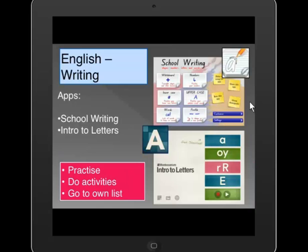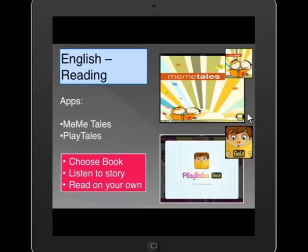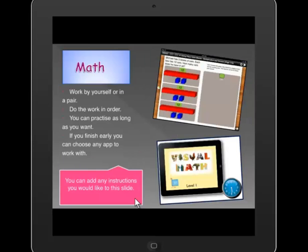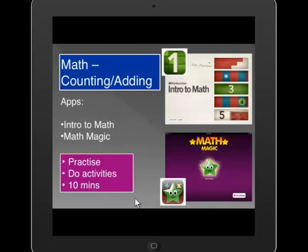For writing, the same structure applies: practice, do activities, then go to their own list in the school writing app. For reading, I ask them to read certain books, choose a book, listen to a story, and then read that story on their own. I've done the same thing with math — I won't read through all of that but just show you what it looks like.